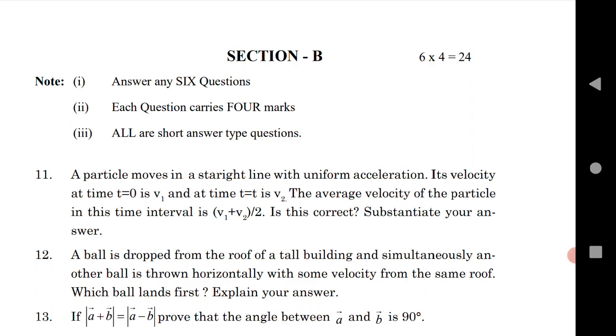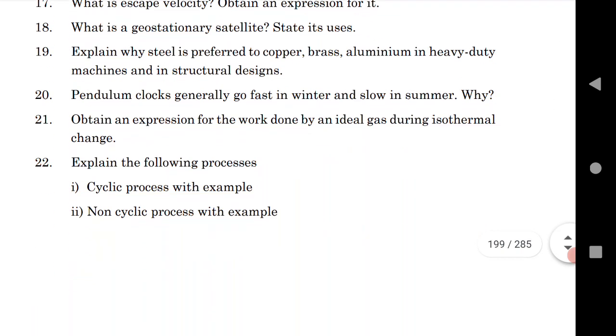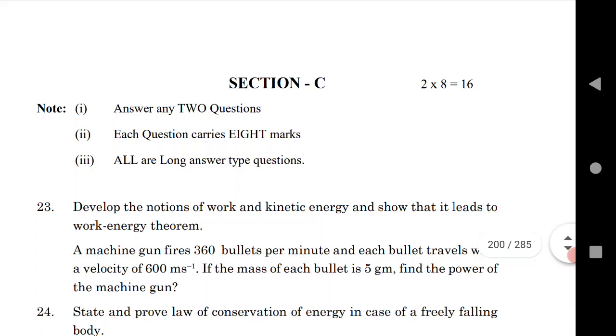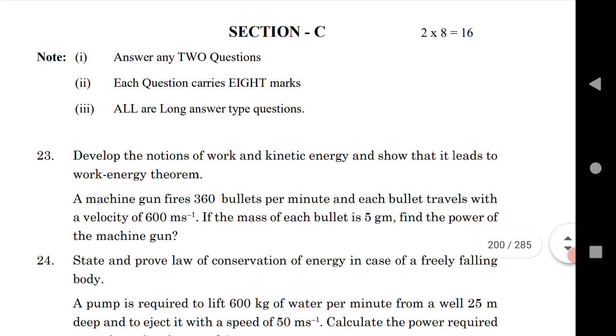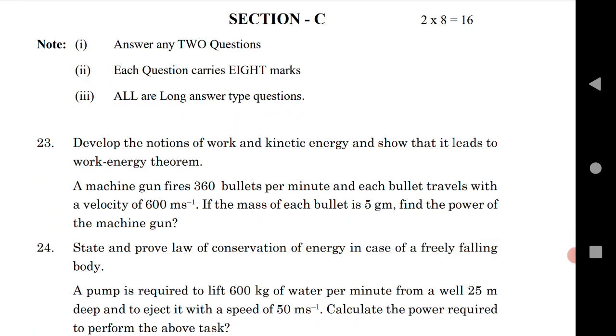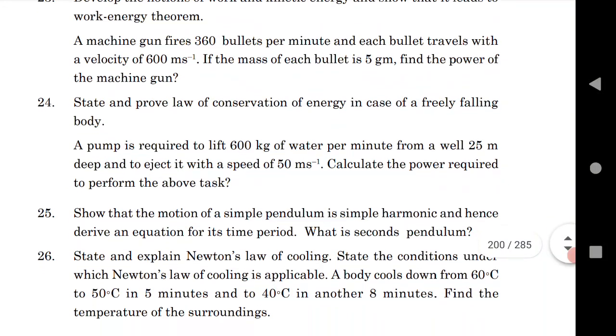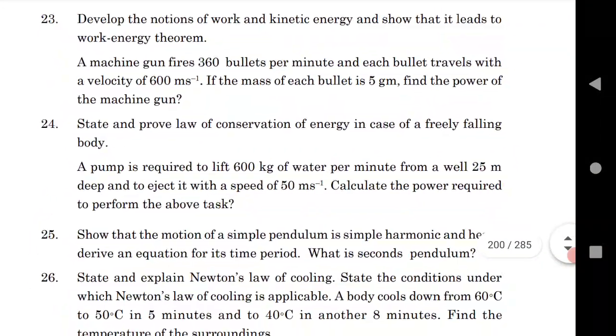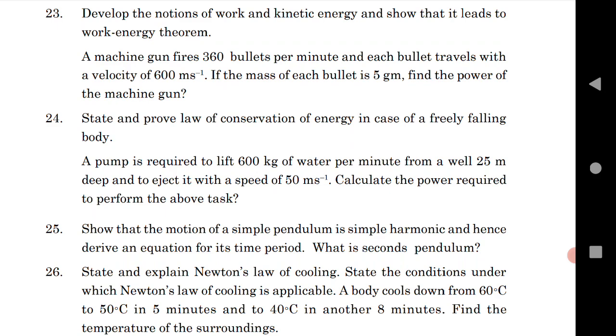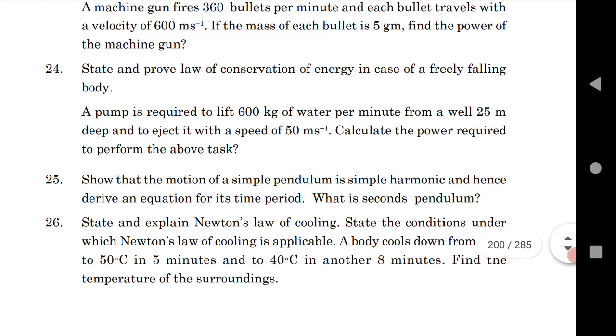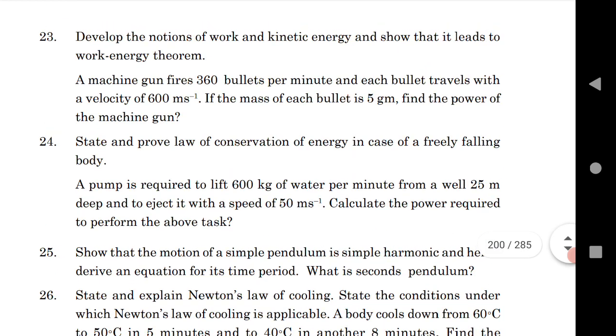Next is Section C that gives you total 16 marks, that is 8 plus 8, 16 marks. In this section previously they used to ask three questions and asked you to answer two, but this year they are giving you 50% choices out of four questions—you have to do only two questions. Question 23 is from work, power, energy; 24 is also from work, power, energy; 25 is from oscillation; 26 is from thermal properties of matter. This year they again ask some topics from thermodynamics.